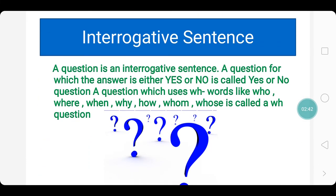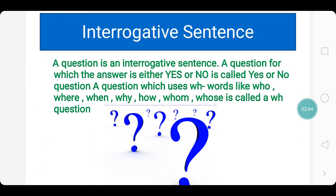Next, we move on to interrogative sentence. A question is an interrogative sentence. Any sentence which conveys a question is an interrogative sentence. A question for which the answer is either yes or no is called a yes or no question. A question which uses WH words like who, where, when, why, how, whom, whose is called a WH question.